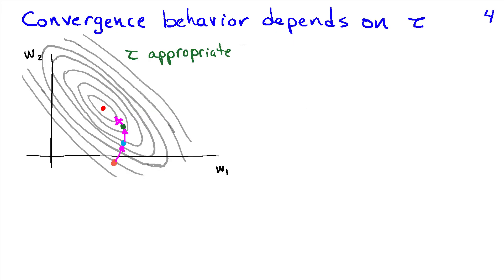A geometric insight is very valuable here, and we can see that the convergence behavior depends on tau. So if I choose an appropriate value for tau, I'm going to take steps in the negative gradient direction such that I get closer and closer to the optimum value for w.